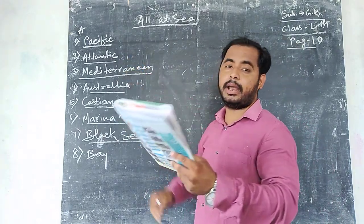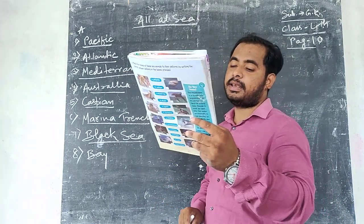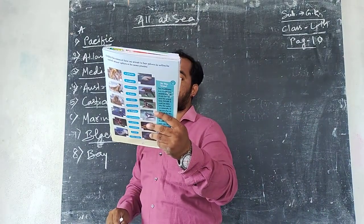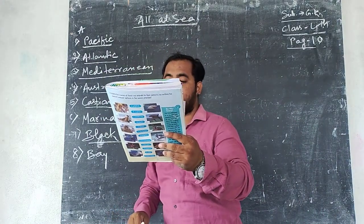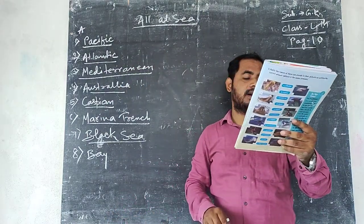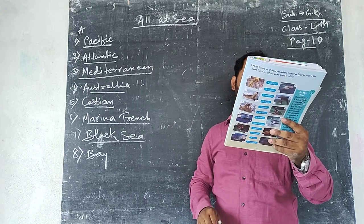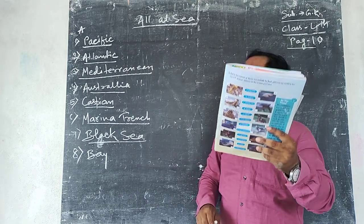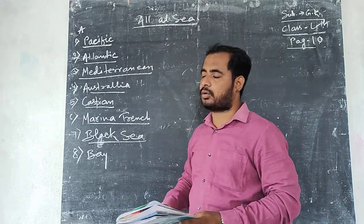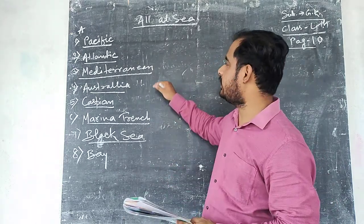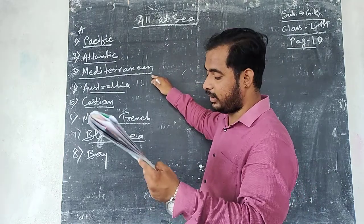Question number 3: This sea is connected to the Atlantic Ocean and has islands like Sicily, Sardinia, and Cyprus. The answer to question number 3 is Mediterranean Sea.